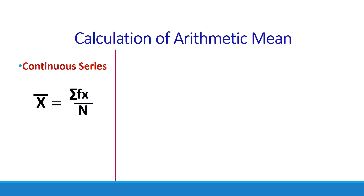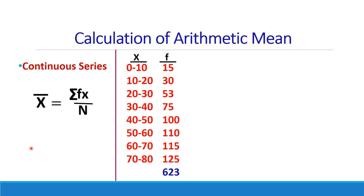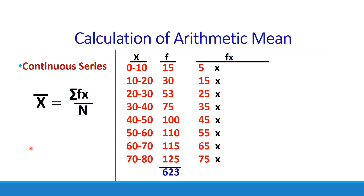Let us take an example for the calculation of arithmetic mean in the continuous series. The x values are given as class intervals: 0 to 10, 10 to 20, and so on, because it is a continuous series. The frequency values are also given, and the total of the frequencies is 623, which is n. First, we find the mid values of all class intervals: the mid value of 0–10 is 5, of 10–20 is 15, of 20–30 is 25, and so on. These mid values are then multiplied with their corresponding frequencies.